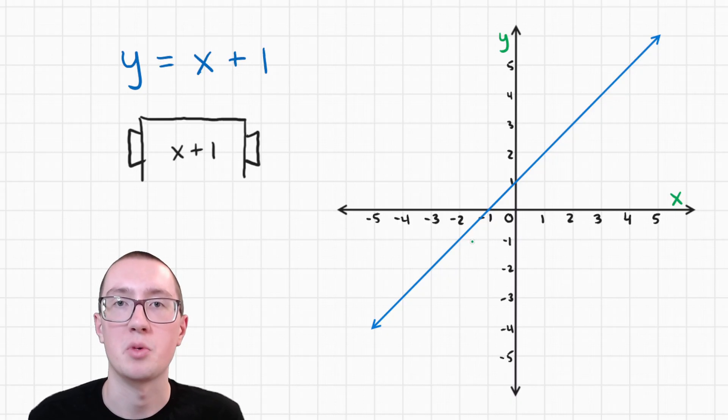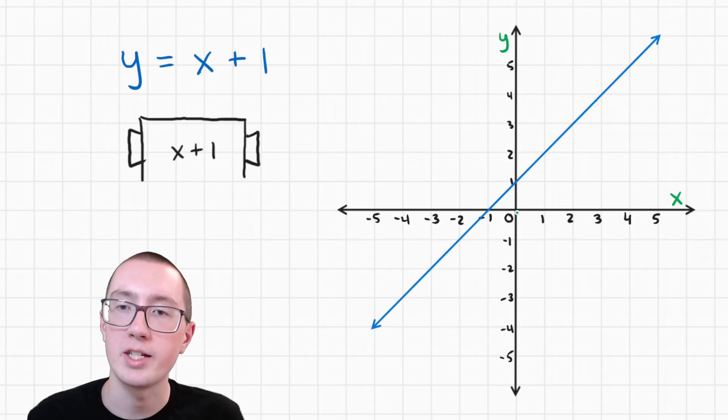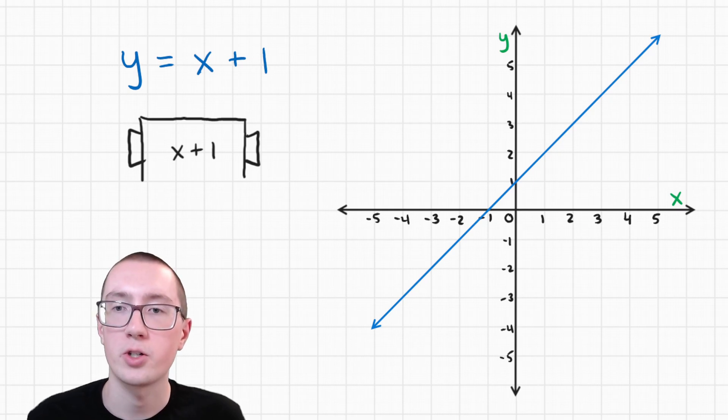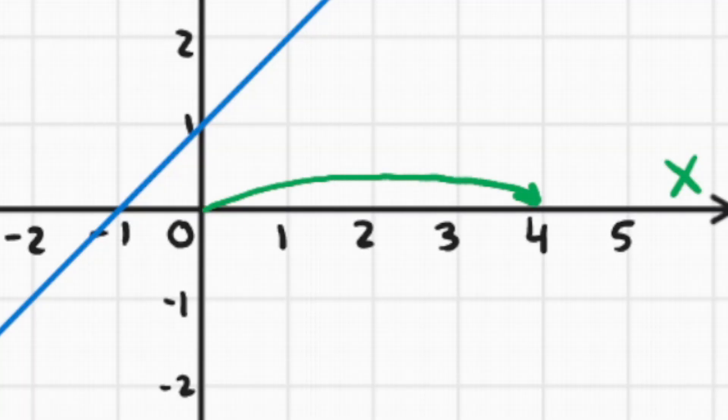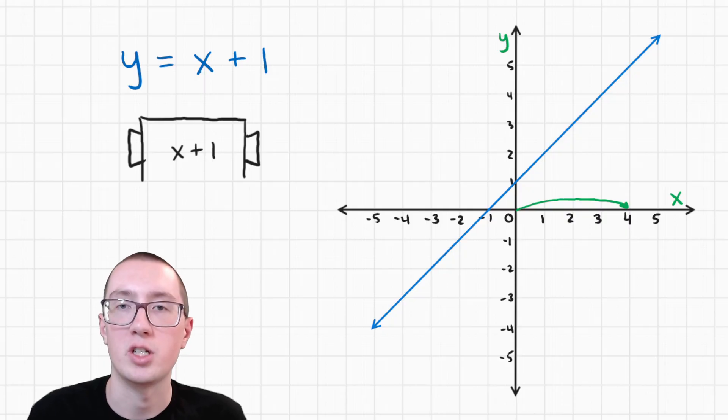So for example, if we want to find out what happens when we put four into the machine, we need to go to four on the left and right line here, which is called the x axis. So we're going to go four squares to the right. And now to see what we're going to get out of the machine if we put in four, we just need to see how far up or down we go.